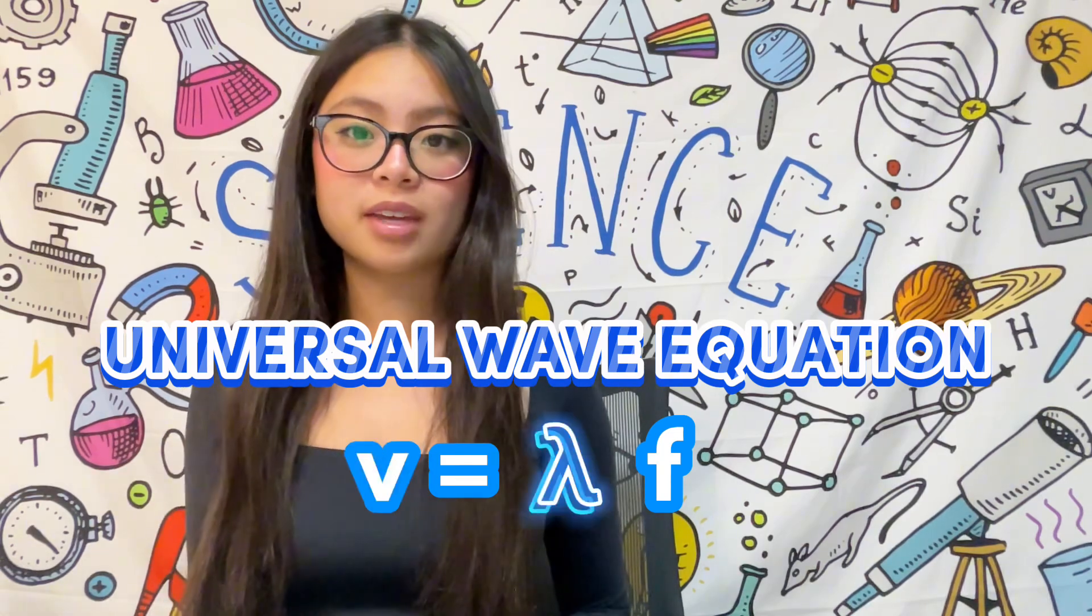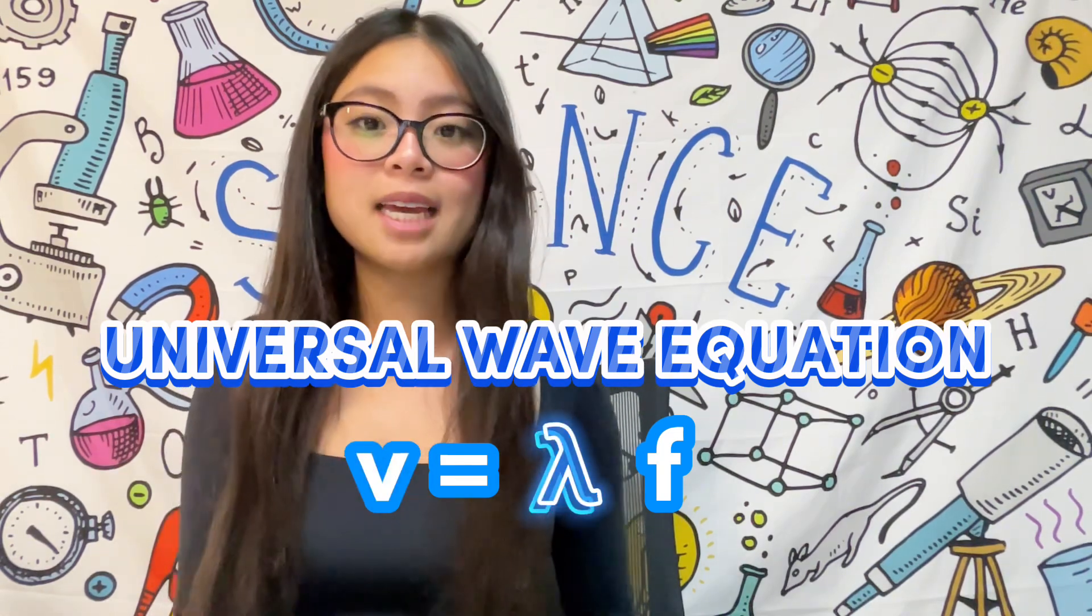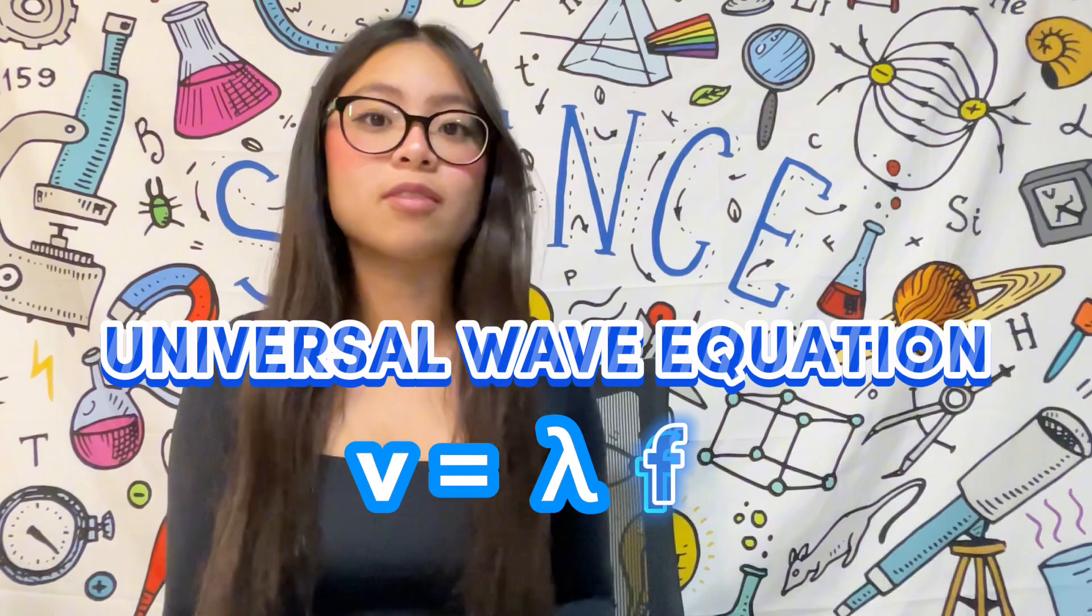where V is the speed of the wave, lambda is the wavelength in meters, and F is the frequency in hertz.